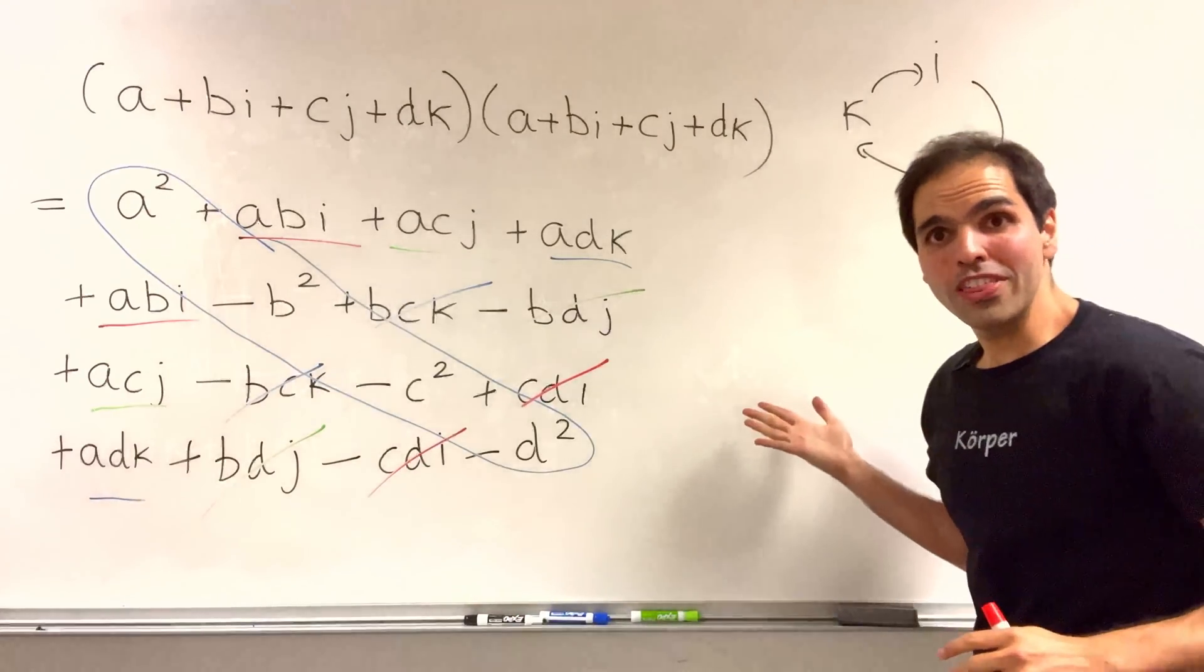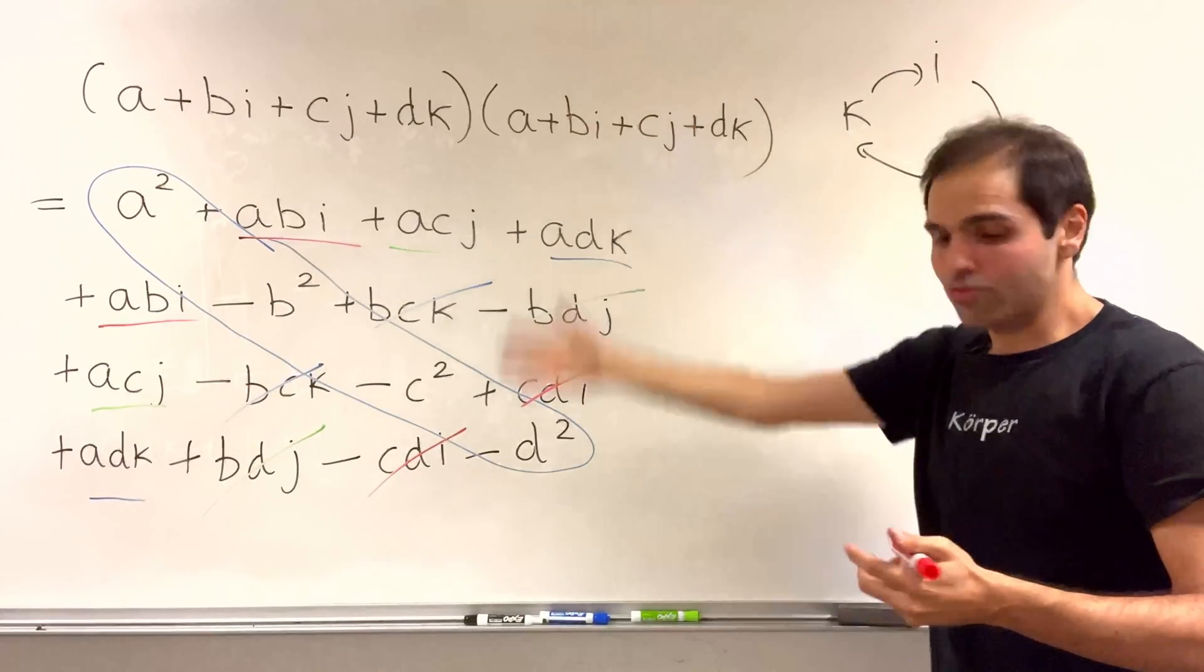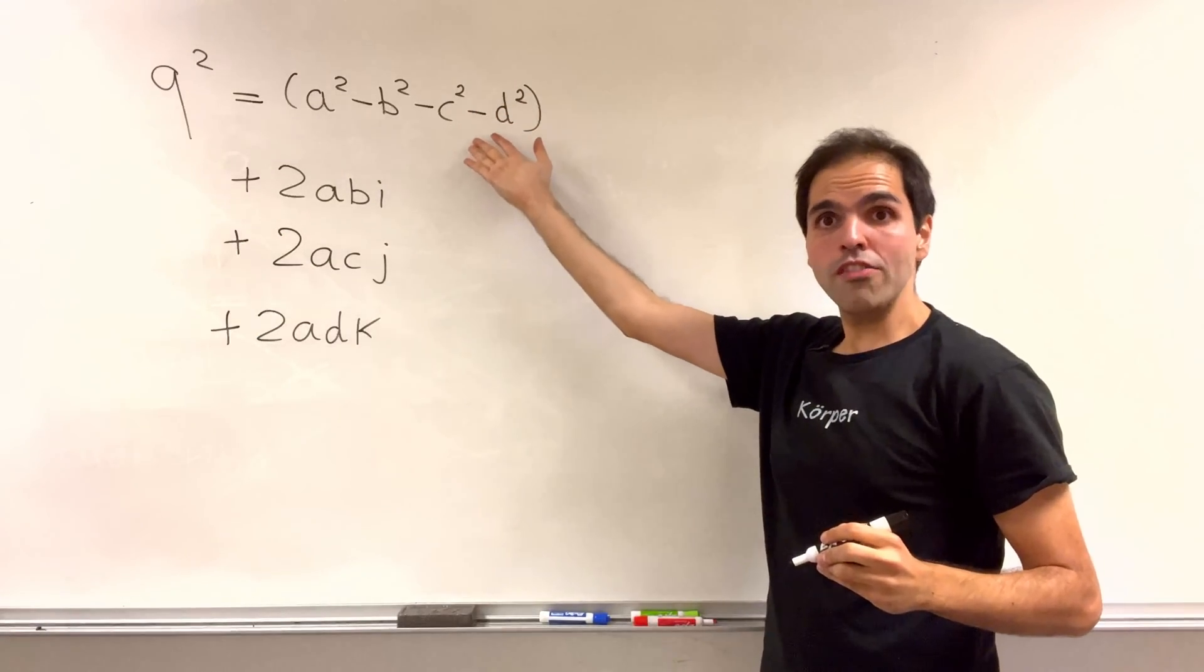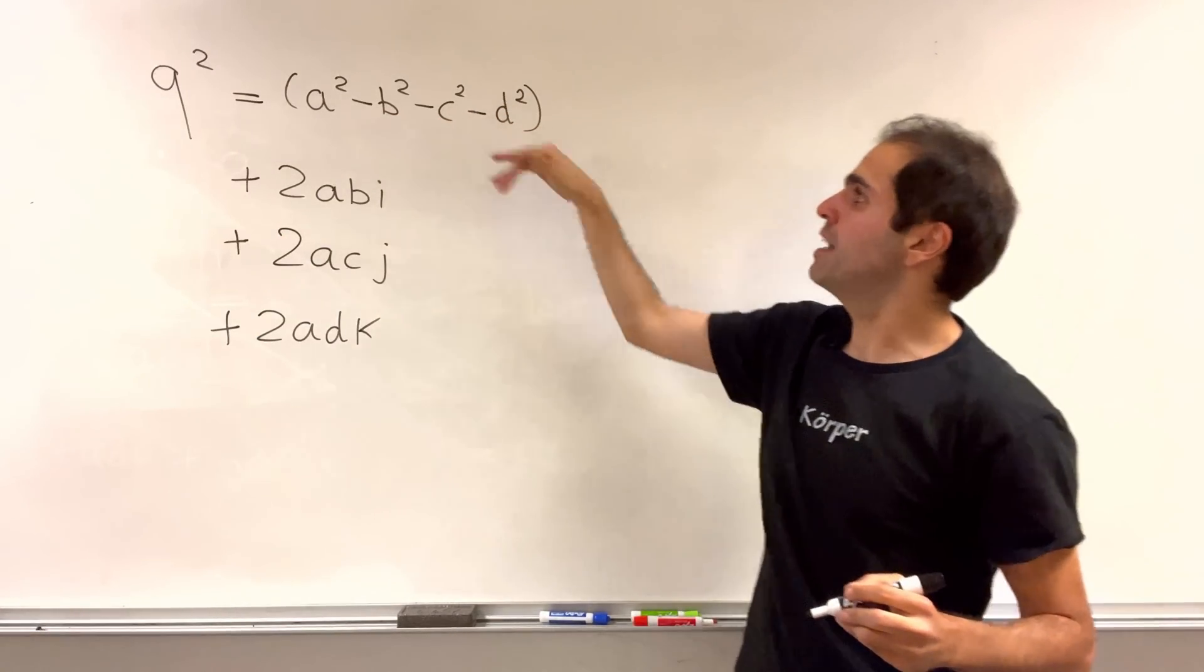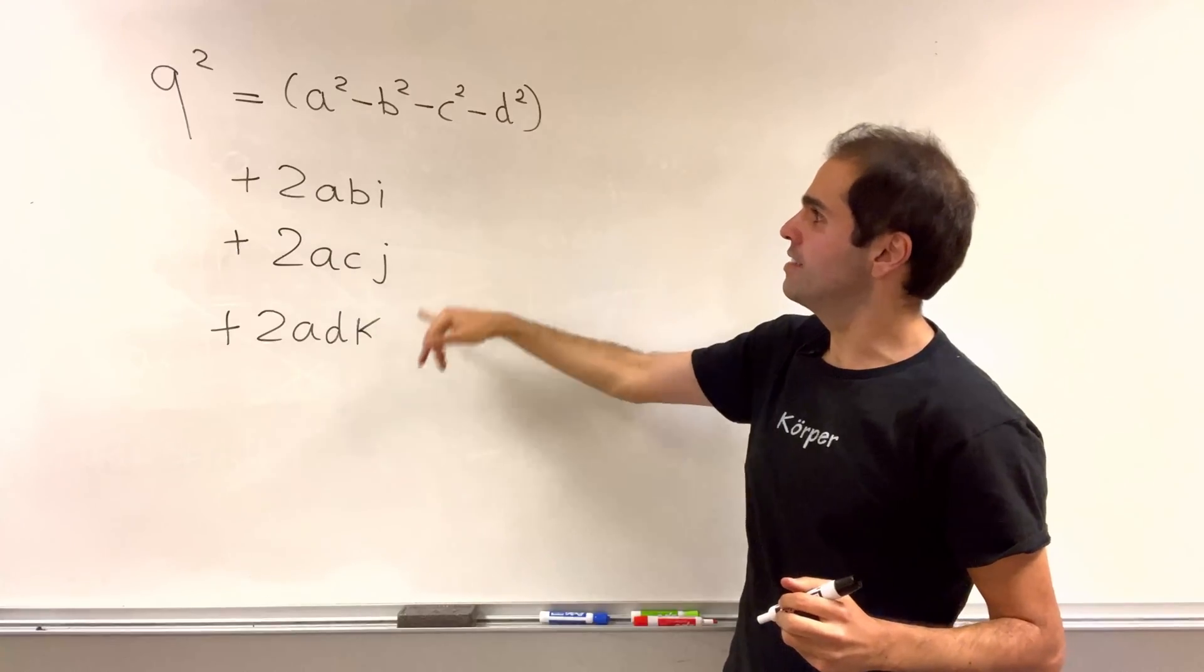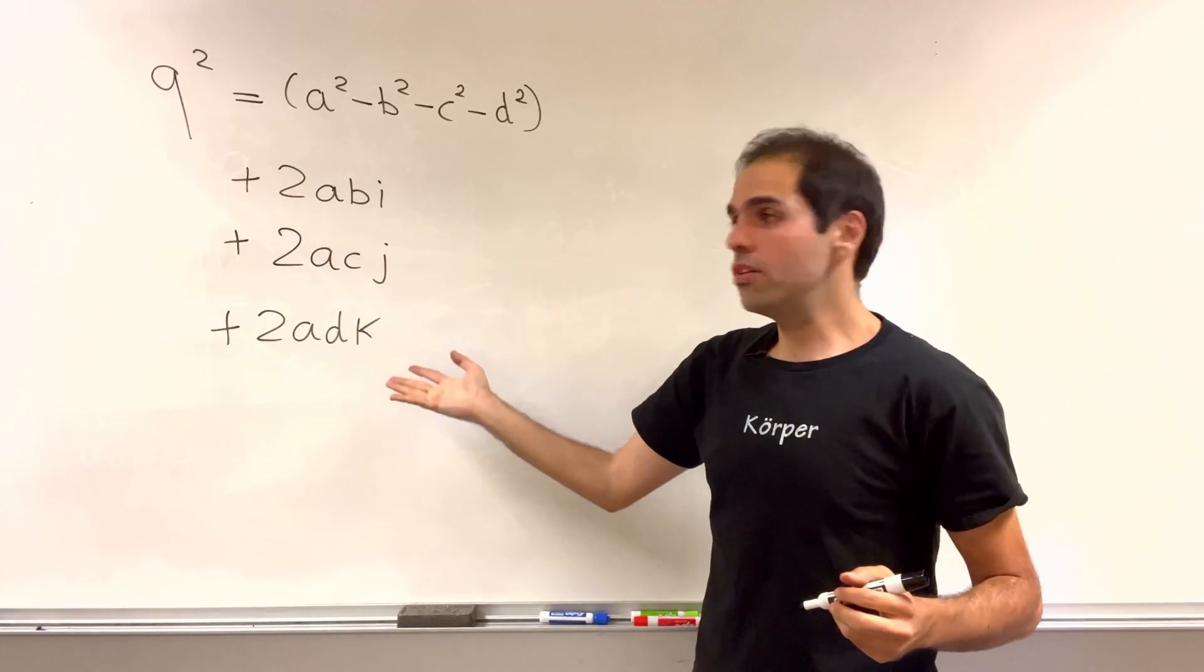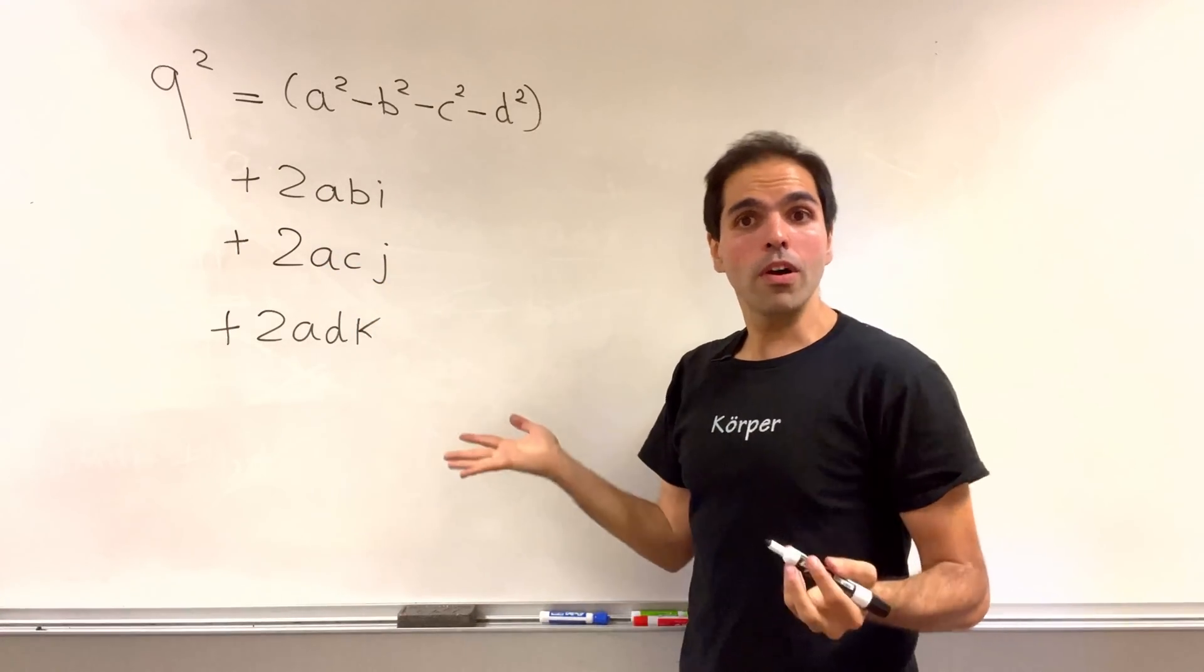Okay, and the cool thing is then, you can just write this as a quaternion as follows. So the square of any quaternion is a squared minus b squared minus c squared minus d squared, plus two abi, plus two acj, plus two adk.